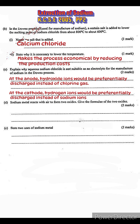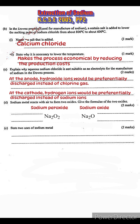Part d: sodium metal reacts with air to form two oxides. Give the formula of the two oxides. The two oxides are sodium peroxide (Na₂O₂) and sodium oxide (Na₂O).